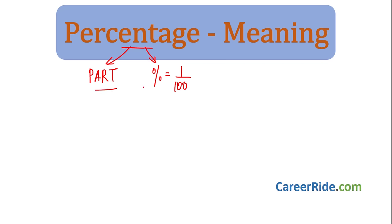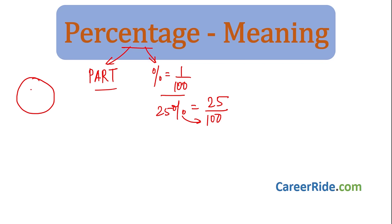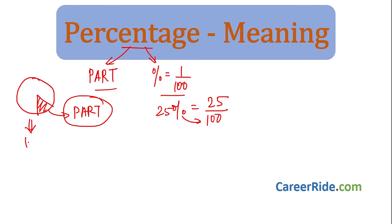Percentage very simply means a part, and percentage means divide by 100. So if someone says 25%, it would simply be 25 divided by 100. For example, this is a biscuit — a whole biscuit. If someone says give me 30% of the biscuit, you will remove some part and give it to the other person. So a part of the whole is nothing but the percentage of the whole.